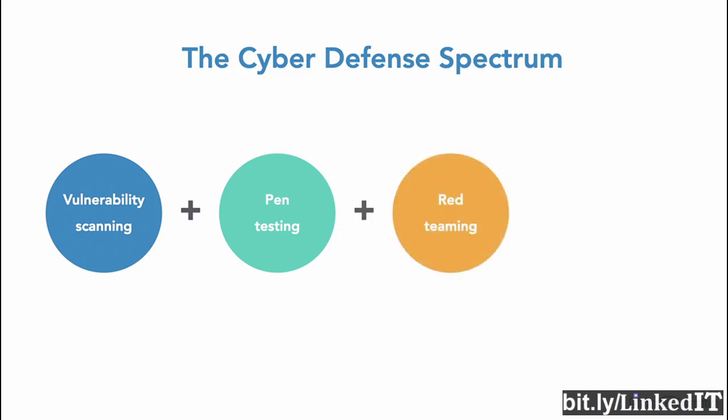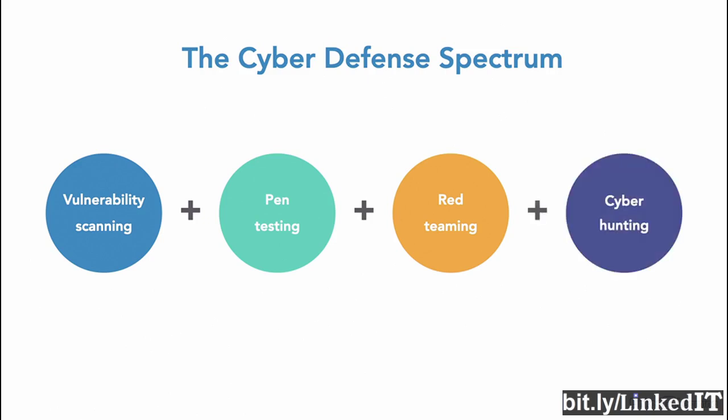The ultimate pen test is called a red team test, where a team of pen testers are given authority to mount an unannounced attack on the whole network, with the objective of doing everything that an attacker would to find a way to penetrate the network and get to its internal systems. Finally, there is a new approach and a new breed of professional called a cyber hunter, whose job is to do deep monitoring of the network and server environment, looking for indicators that the network has been compromised.